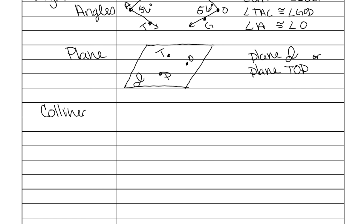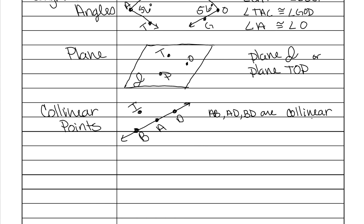The next thing we're going to look at are called collinear points. BA are collinear, AD are collinear, and BD are collinear. You only need to list two for collinear, because collinear just means that they all lie on the same line, and you only need two points to identify a line. So AB, AD, or BD are collinear. If you were to pick a point off the line — like point I — then B and I, A and I, or D and I would be called non-collinear.